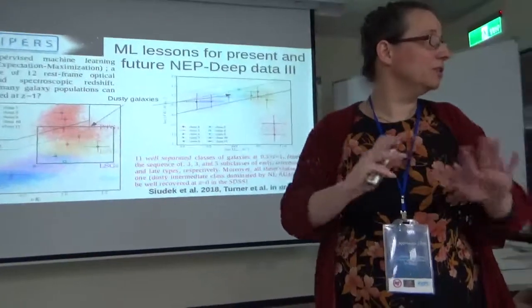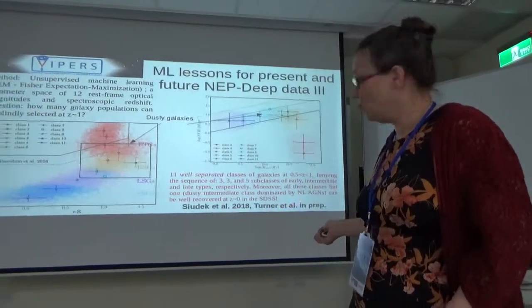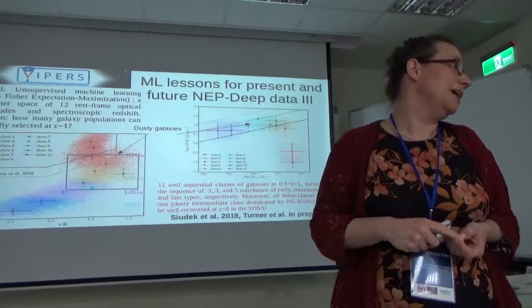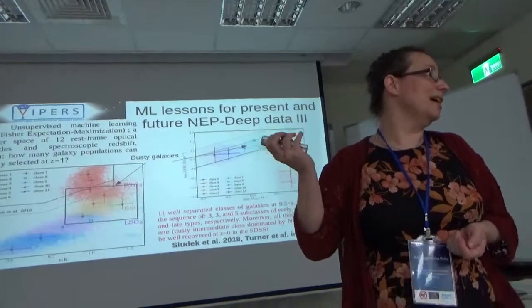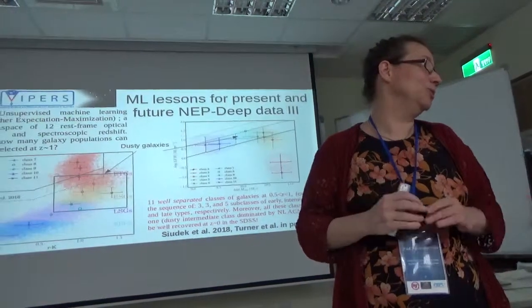Question: Is there a class corresponding to the AGN? Response: Yes, actually this one — and it's also very interesting because this is very preliminary. We have also an ongoing work to try to recover these classes in the SDSS. It seems that in the SDSS at low redshift, all the classes are well recovered — except this one, which seems to disappear.